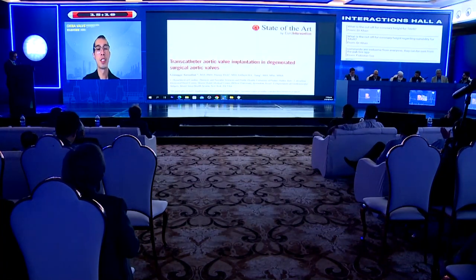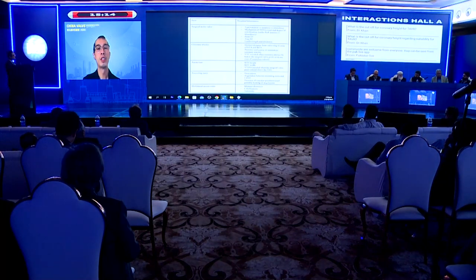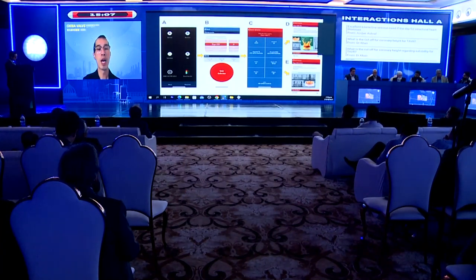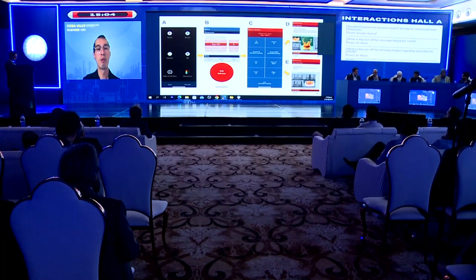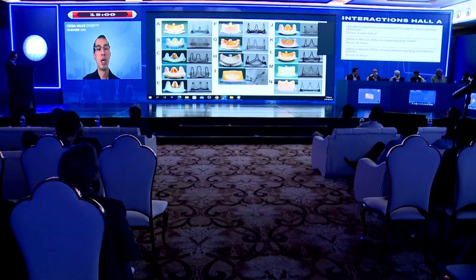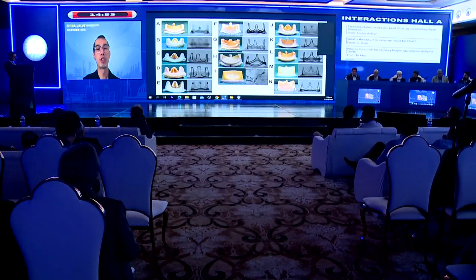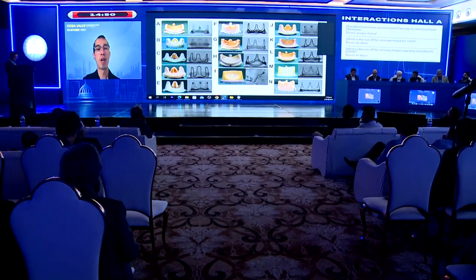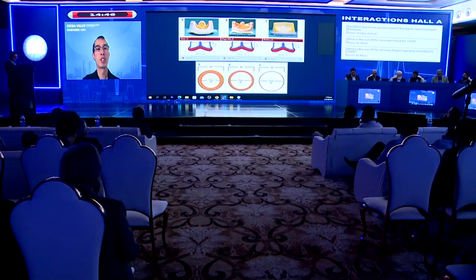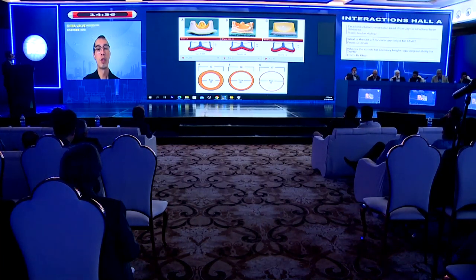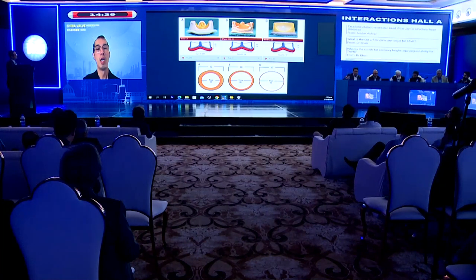For valve-in-valve TAVR, a published review outlines the CT elements to evaluate. The Valve-in-Valve app allows identification of which surgical valve was used and selection of the appropriate transcatheter valve. Key differences exist between valve types: for porcine valves with internal mounting, the true inner diameter is much smaller than the labeled internal diameter, whereas for the Mitroflow valve the true ID equals the stent ID — but even at the same labeled size, the ID is smaller than a Magna valve.